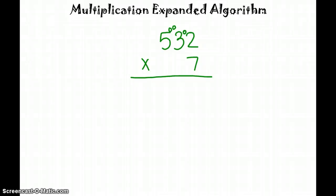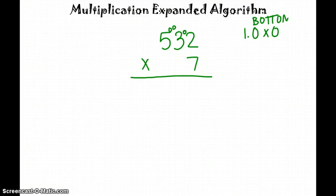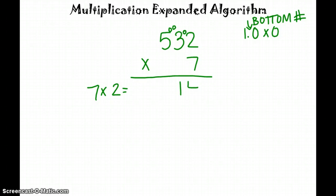Our first step is going to be to multiply our ones times our ones. We always start with the ones place on the bottom. So we're going to take 7 times 2, and that equals 14, and we're going to line that up in the tens and the ones place.